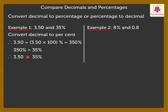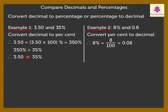Let's compare 8% and 0.8. Here, let's convert the percentage to a decimal. Therefore, 8% is equal to 8 divided by 100 is equal to 0.08. 0.08 is less than 0.8. Thus, 8% is less than 0.8.